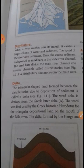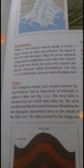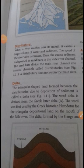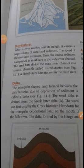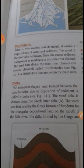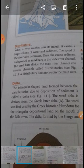When a river reaches near its mouth, it carries a large volume of water and sediment. The speed of the river also decreases. Thus, the excess sediment is deposited as sandbars in the wide river channel. The sandbars divide the main river channel into several channels called distributaries. A distributary does not rejoin the main river.